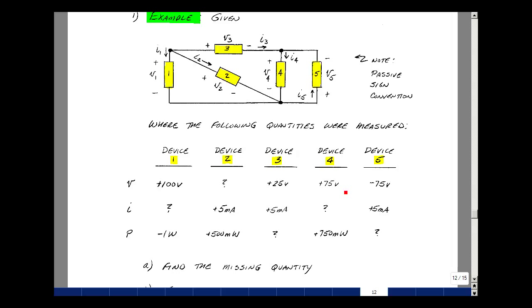Okay, for device number four, know the power and the voltage, and again, voltage times current is power, so power divided by voltage would give me the current. So 75 milliwatts divided by 75 is actually 10 milliamps.